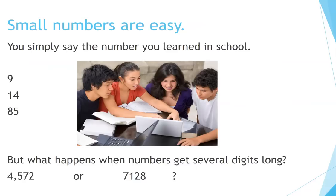Small numbers are easy — you simply say the number you learned in school: 9, 14, 85. But what happens when numbers get several digits long? For example, 4,572 or 7,128.